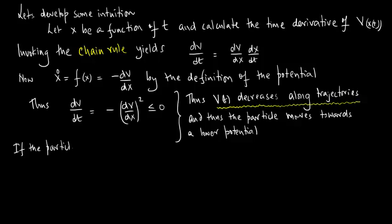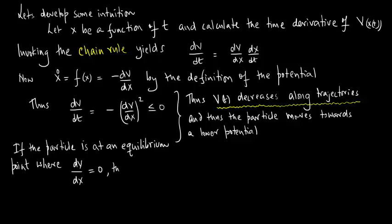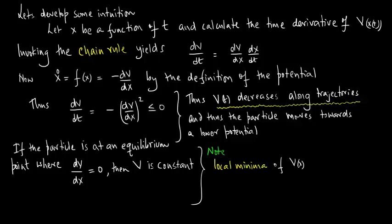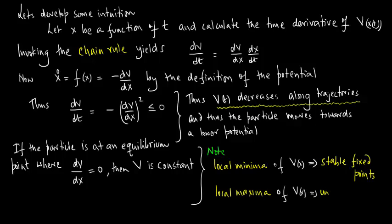If the particle is at equilibrium, then dV dx equals 0 and V is simply a constant. Note that the local minima of V of x give us stable fixed points, and the local maxima of V of x give us unstable fixed points.